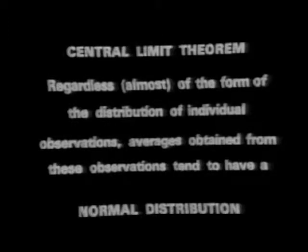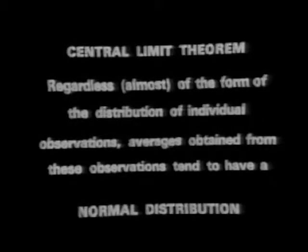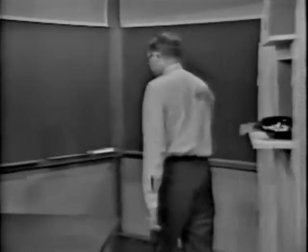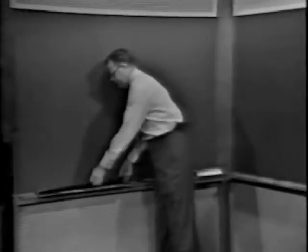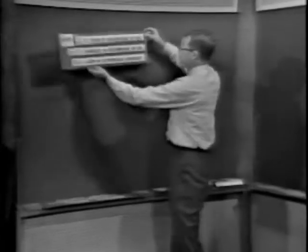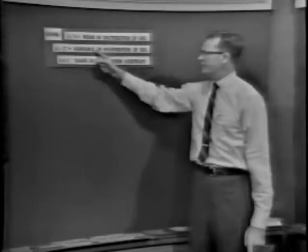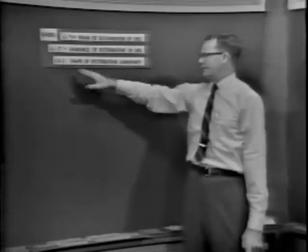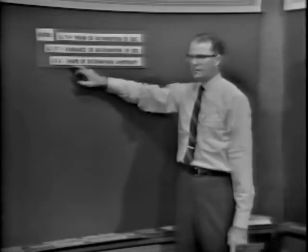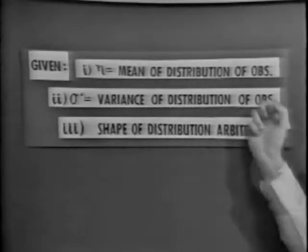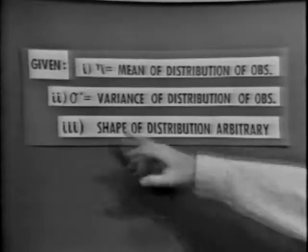We can characterize this sort of lay expression of the normal distribution. Let's try to characterize it a bit more mathematically. Imagine that you have a distribution. Eta is the mean of the distribution of the observations. Sigma squared is the variance of the distribution of observations. And I don't care about the shape of the distribution — I don't care what its name is, and I don't care whether this is a discrete or a continuous distribution. Eta is the mean, sigma squared is its variance, and the shape is arbitrary.